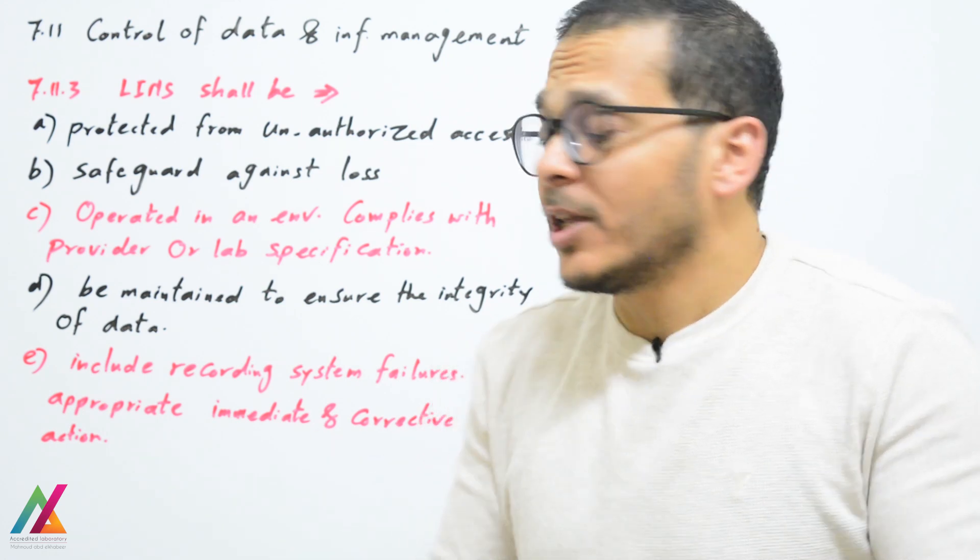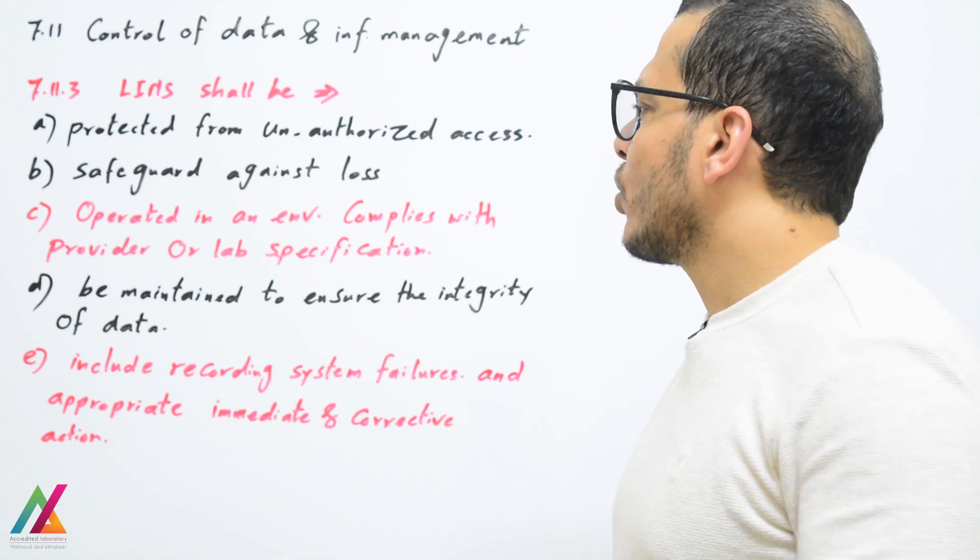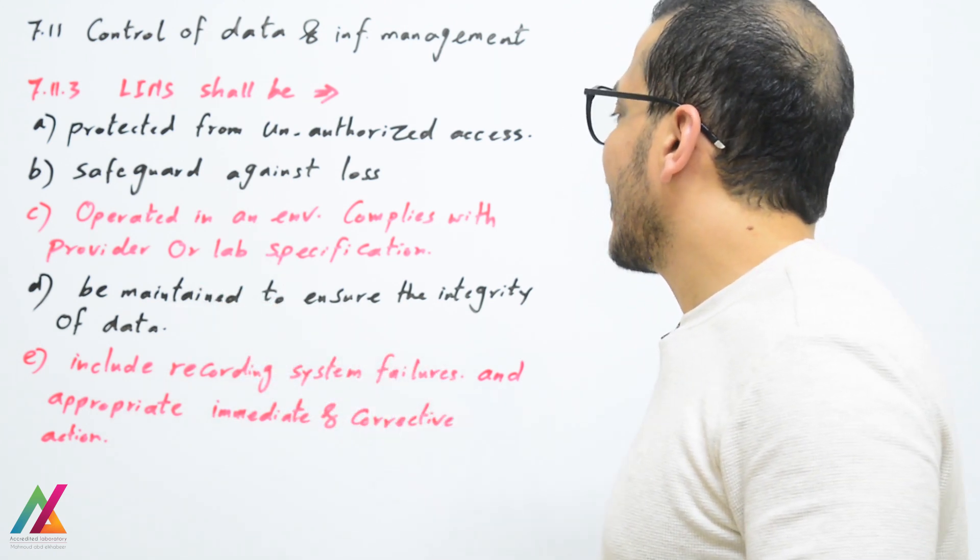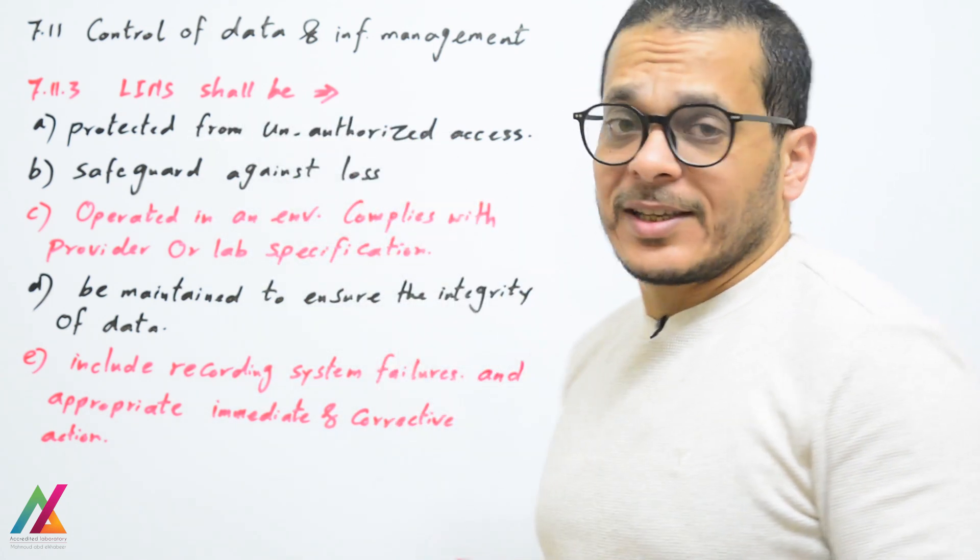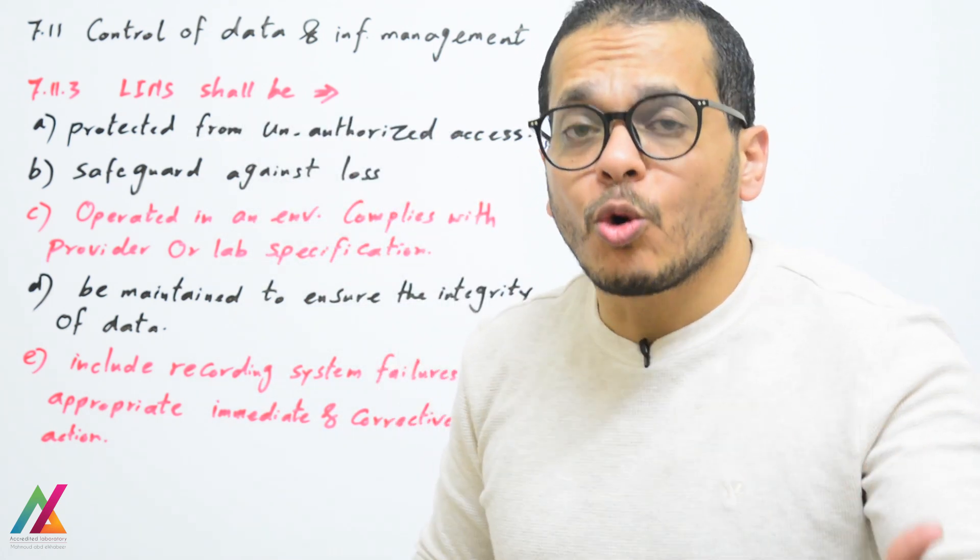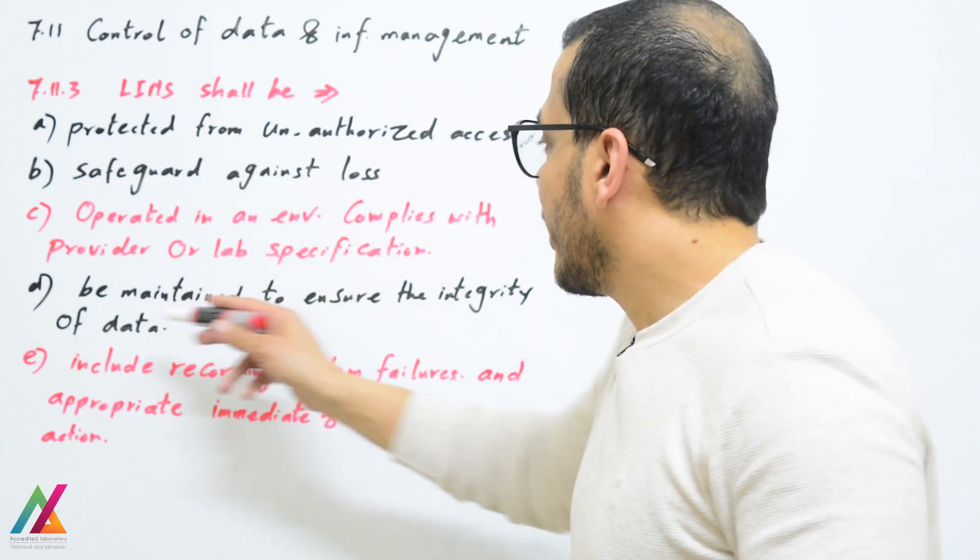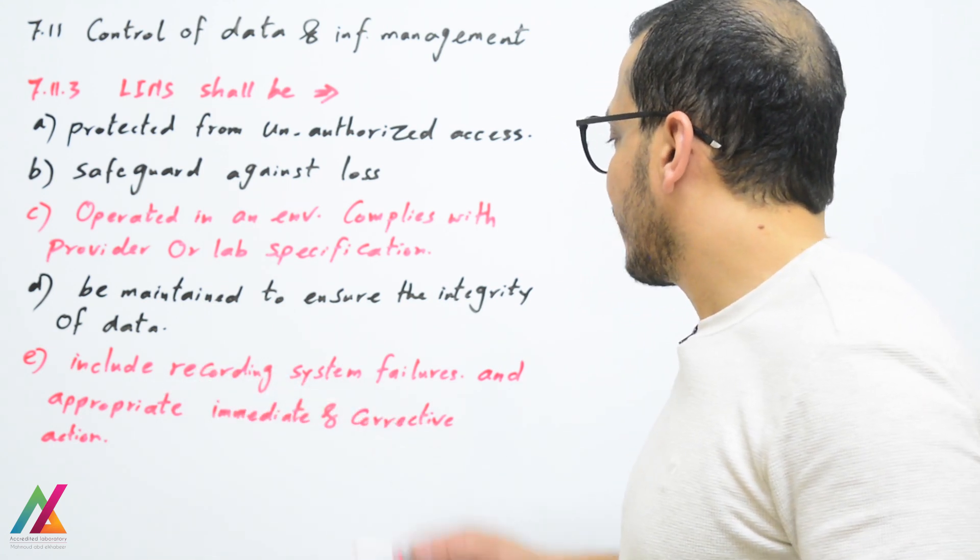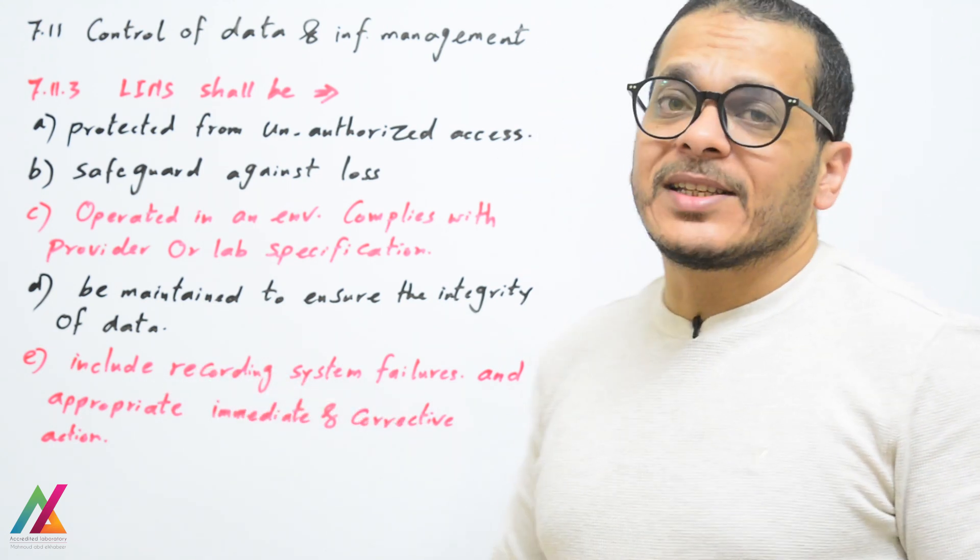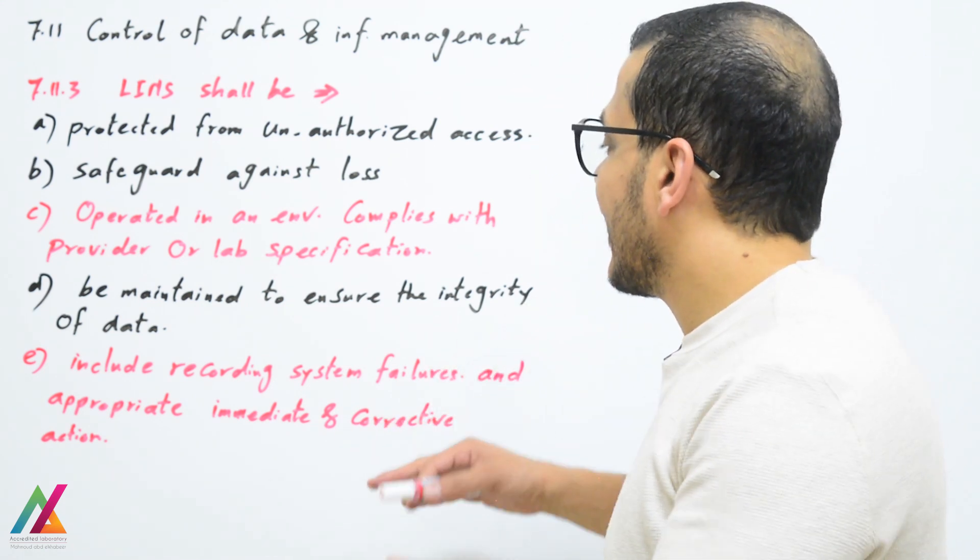LIMS should be operated in an environment that complies with the provider or lab specification and be maintained to ensure the integrity of data. If you protect access to data and safeguard against loss, that will ensure the integrity of data. Include recording system failures and appropriate immediate and corrective action. You should have appropriate corrective action in case of any failure inside LIMS.